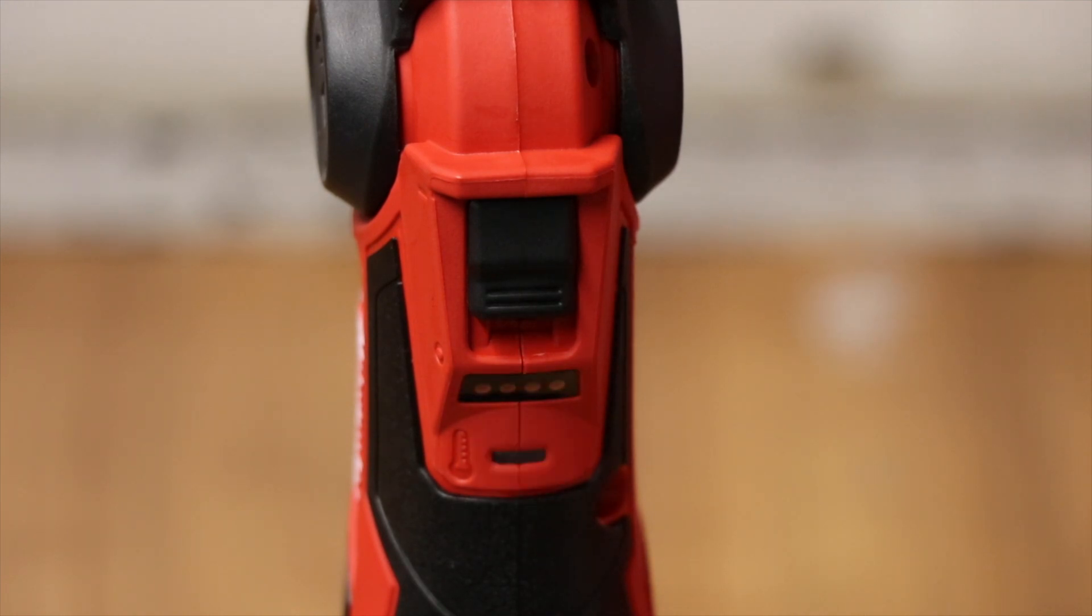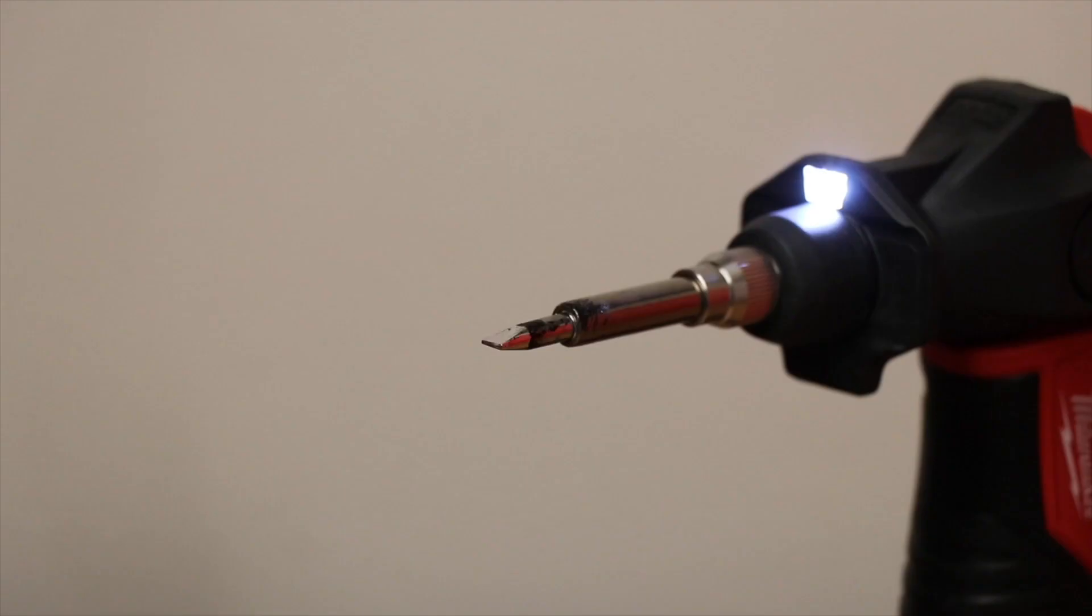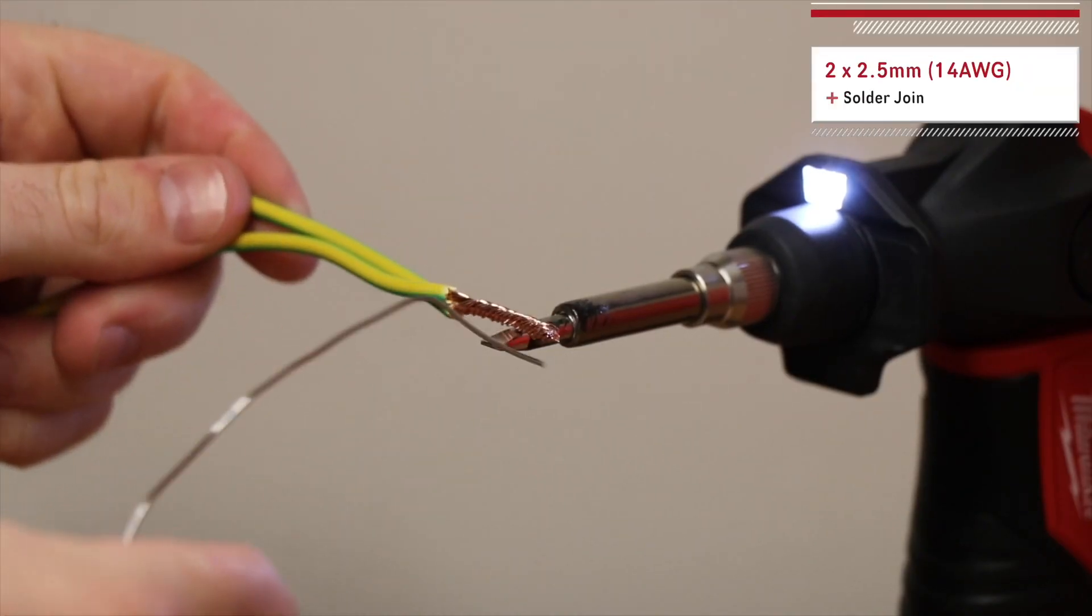LEDs to indicate it's warming up, ready to use, off and still hot. Battery level plus it's got a working light so you can see what you're soldering better. Let's give it some field tests and check how it performs.